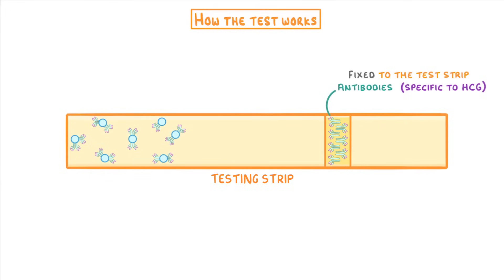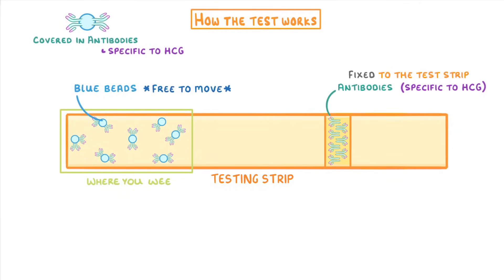Then, on the left side, we have the part where you wee, which contains blue beads covered in the same monoclonal antibodies as we saw on the right side. So again, these will be specific to HCG. Importantly though, the beads and the antibodies they're attached to are completely free to move around. They're not fixed to the strip.